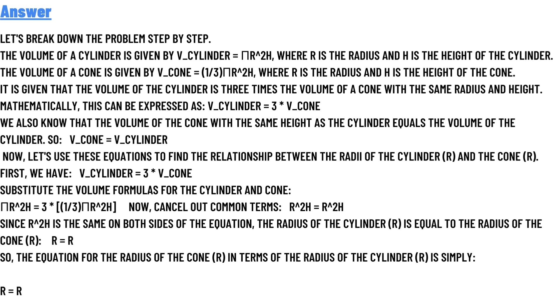Mathematically, this can be expressed with the formulas given. So the equation for the radius of the cone in terms of the radius of the cylinder is simply: R = R.